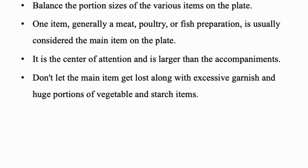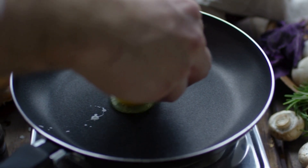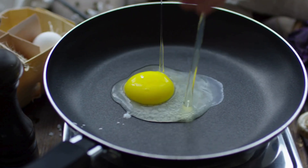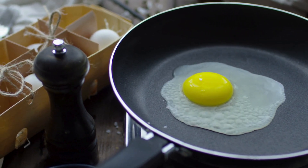What about cooking methods? Different methods of cooking produce different results in the taste, appearance, and texture of the food. One must avoid using food cooked with a single method on a single plate. Using dishes cooked by different methods not only adds texture but also adds different color and balance to the entire dish.